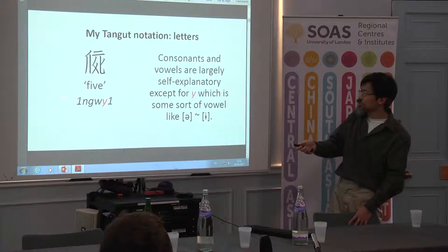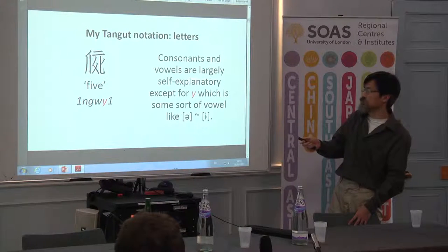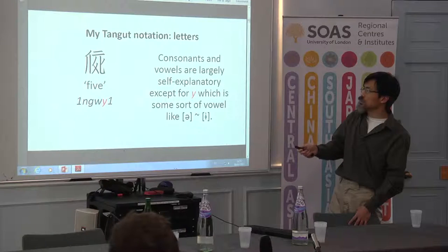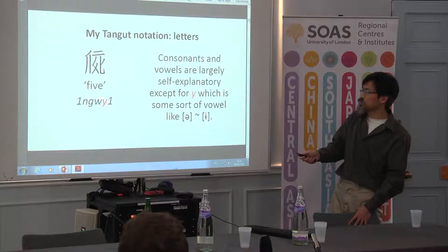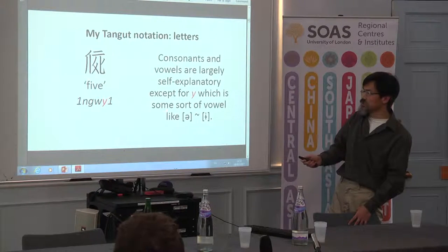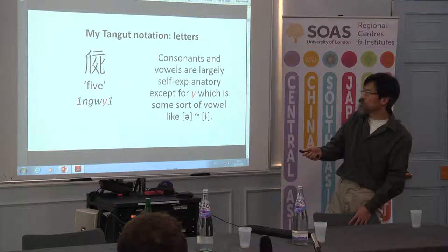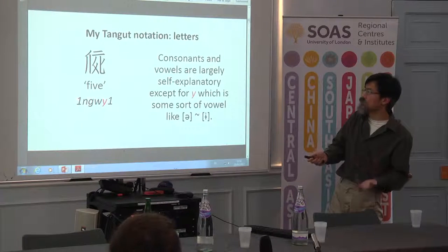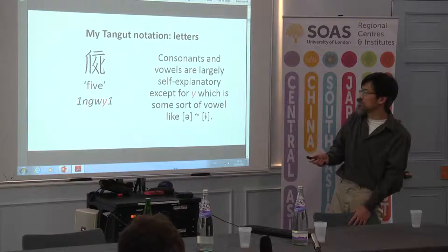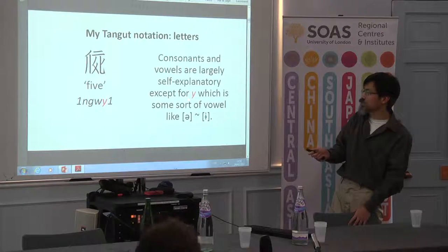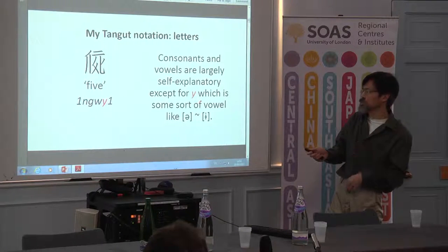The middle of the syllable in my system is fairly straightforward: it's the consonants and vowels of the syllable. The one exception is that I use the letter Y to represent some sort of vowel like ü or u — it's a deliberately noncommittal symbol. My transcription is not intended as phonetic notation; it's somewhat abstract. I use numbers for the tones because I am noncommittal about how tones sounded, and I use Y because all I know about Y for sure is that it's some sort of central vowel.